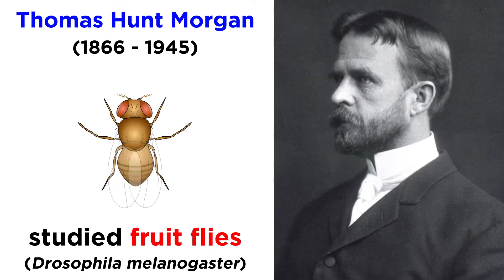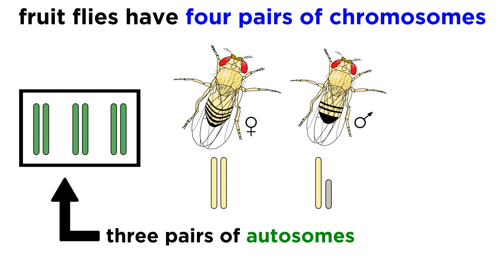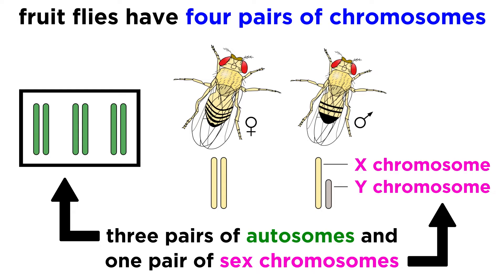Some very compelling evidence for the chromosome theory of inheritance came from the work of Thomas Hunt Morgan. He studied fruit flies, which have only four pairs of chromosomes — those being three pairs of autosomes and one pair of sex chromosomes, or an X and Y chromosome, just like humans. Two X's for a female, and an X and a Y for a male.